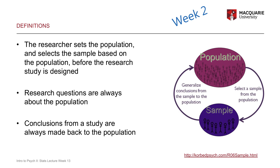In week two we talked in more detail about the distinction between the sample and the population. Even though our research question applies to the population, the actual data we have comes from a sample — because we can't get access to our entire population. We use data from the sample to make a generalization back to a population, which means the characteristics of the sample have to match the population as closely as possible. If they're systematically different, that can lead to biased results.